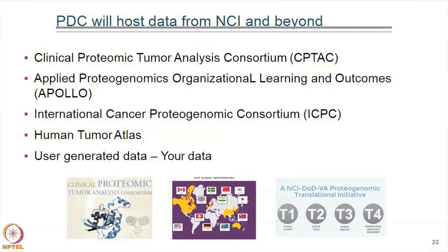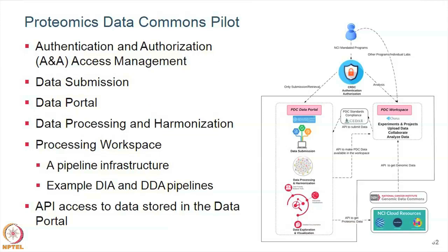To give an idea of what data you will see in future: CPTAC data, Apollo, the International Cancer Proteogenomic Consortium, Human Tumor Atlas, and user-generated data — your own data that you can upload. About six months ago we started building a prototype called the Proteomic Data Commons Pilot, or MVP — a minimally viable product. We built a minimal product with some basic features, bits and pieces of everything discussed, and put it out there to get community feedback and develop from there.